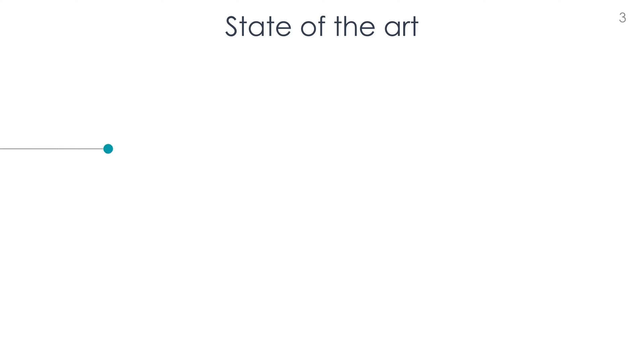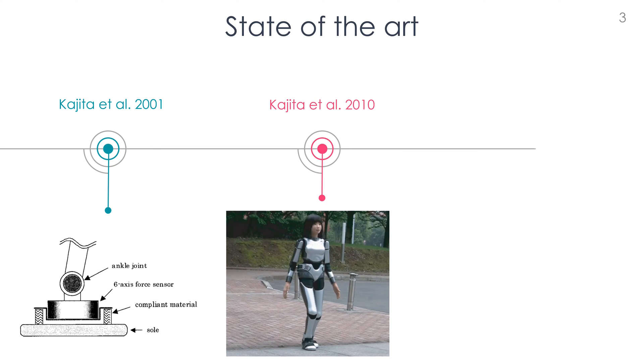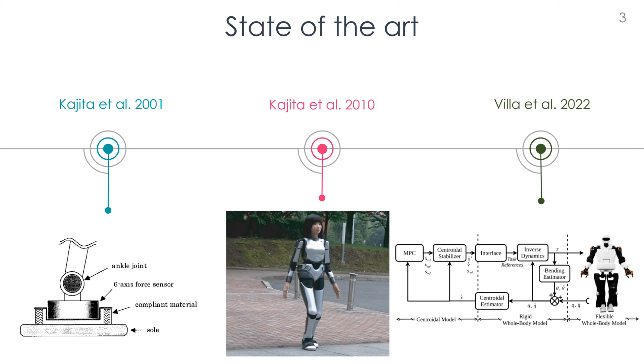This state-of-the-art contains several examples of robots with flexible links. In 2001, Kajita models the compliant material between the robot ankle and the sole. The model is then exploited in 2010 to design a reliable whole-body controller for locomotion in a human-like environment.